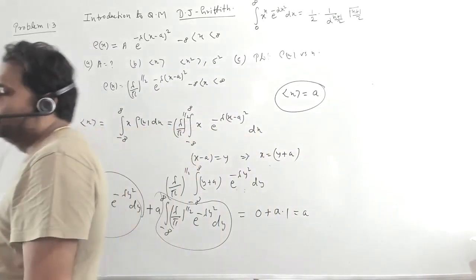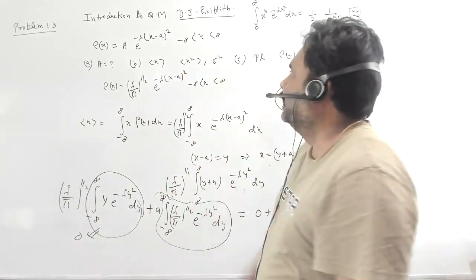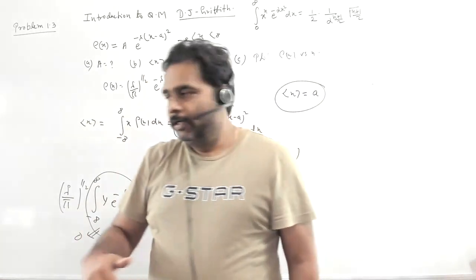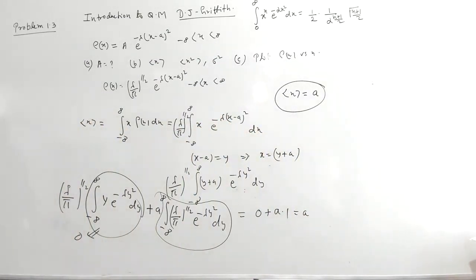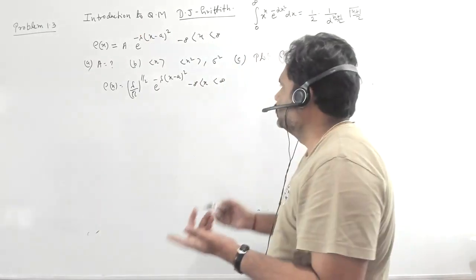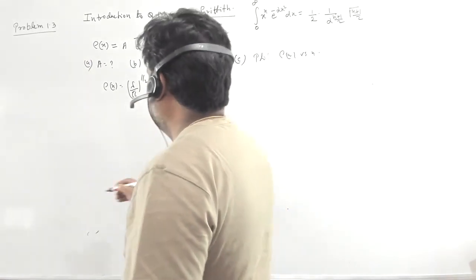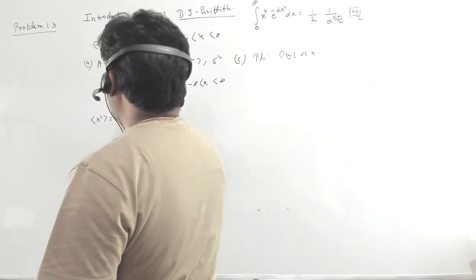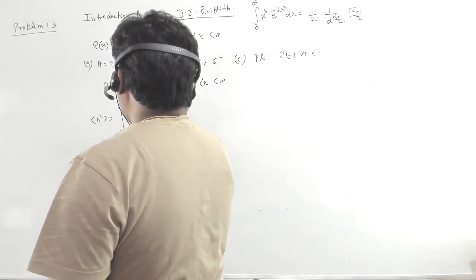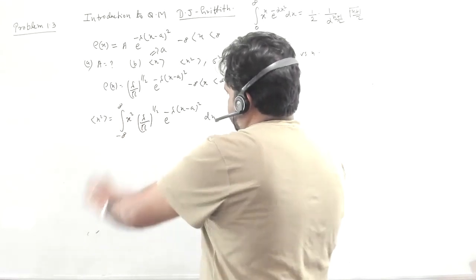So for this particular Gaussian distribution function, the average value of x is equal to a. Now we will go for the expectation value of x², and also the variance. The expectation value of x² is the integral from minus infinity to plus infinity of x² · (λ/π)^(1/2) · e^(−λ(x−a)²) dx.